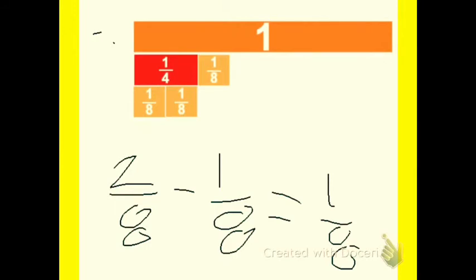So here we made a model. We have one whole, one fourth, and one eighth. So two eighths fit under one fourth. Minus one eighth, so that equals one eighth. Because two minus one equals one.